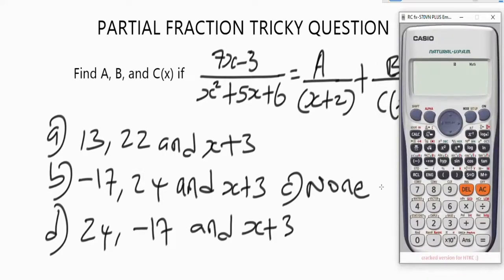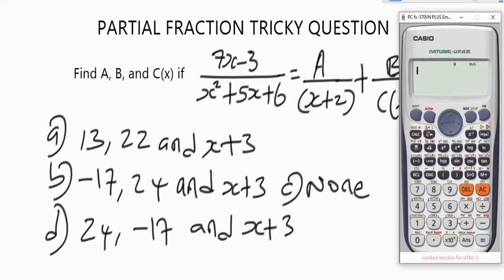This is the Casio fx-991ES Plus N3 calculator. As I have always said, you have to reset it or clear it. Press the shift button, then 9, follow the instruction and press 3. So we have cleared the calculator now.